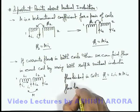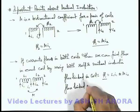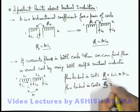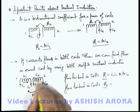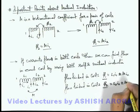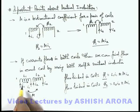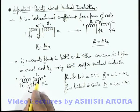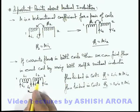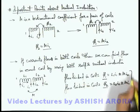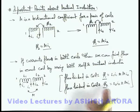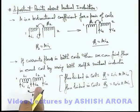Similarly we can calculate the flux linked in coil L-2. This is phi-2, and phi-2 can be written as a flux due to its own current, which is L-2·i-2, again plus or minus M·i-1, because due to current i-1 some flux will be present in the second coil which may be in the same direction or in the opposite direction. This is how we calculate the total magnetic flux through the coils when current is flowing in both.